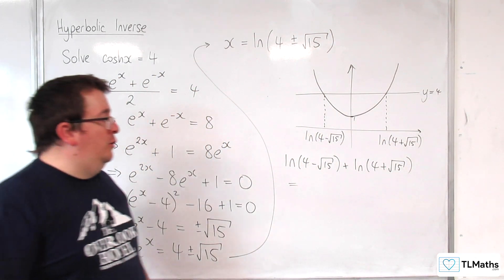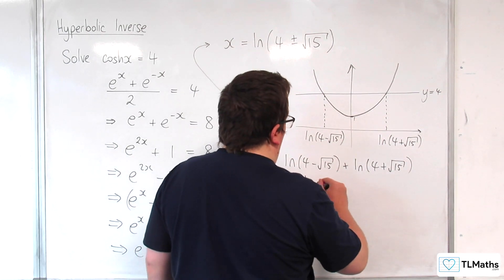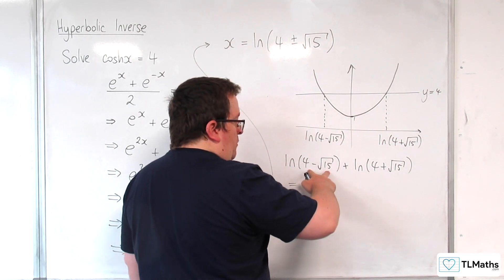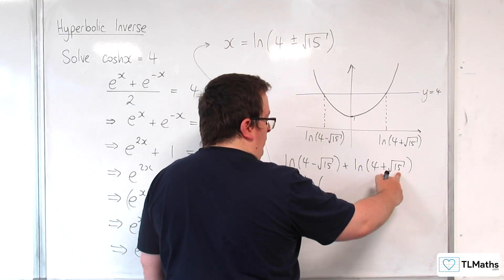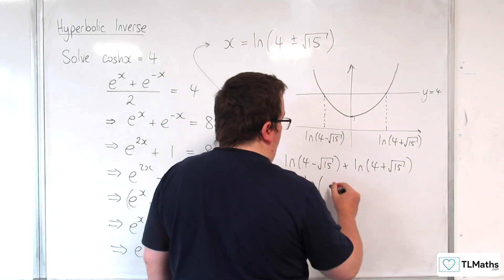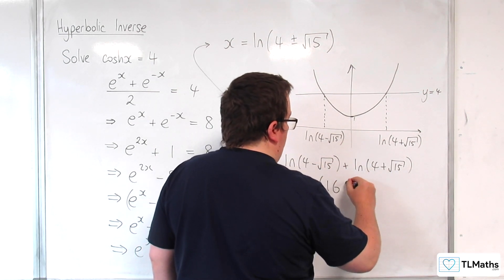So if we use our log laws, we have the log of 4 take away root 15 times 4 plus root 15.